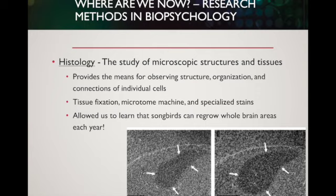We can fix tissue, which means we expose it to chemicals that solidify it, because otherwise it just falls apart. We then use a tiny blade called a microtome machine and particular kinds of stains that are only taken up by different parts of the cell. Histological examination allows us to examine tiny areas.